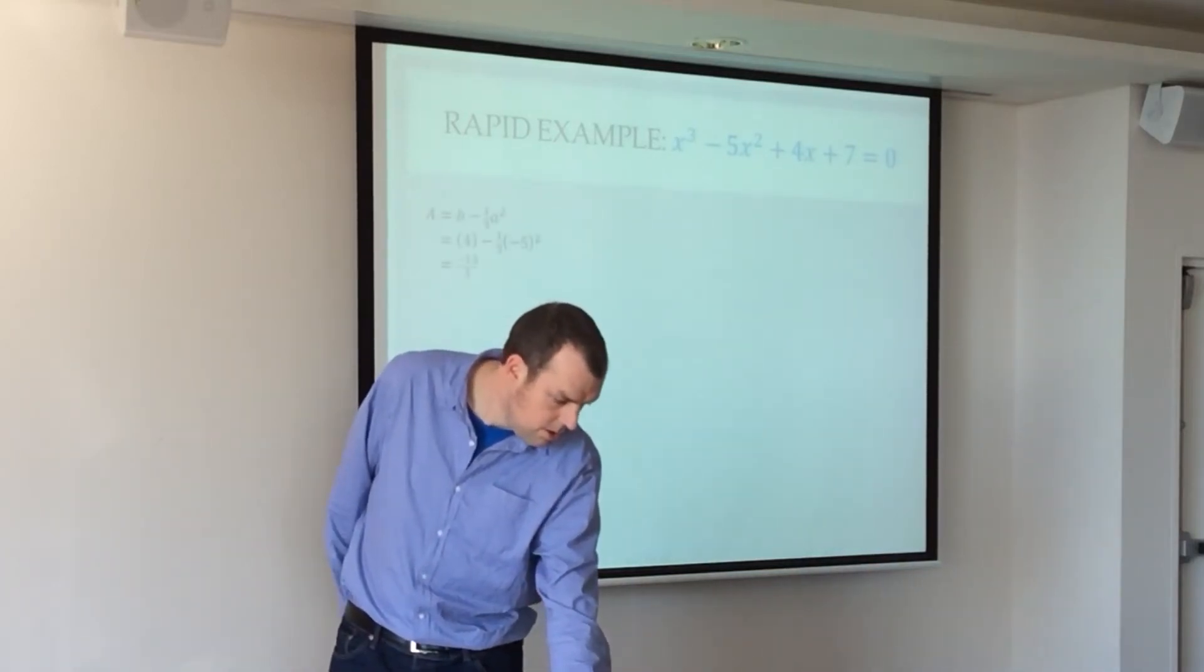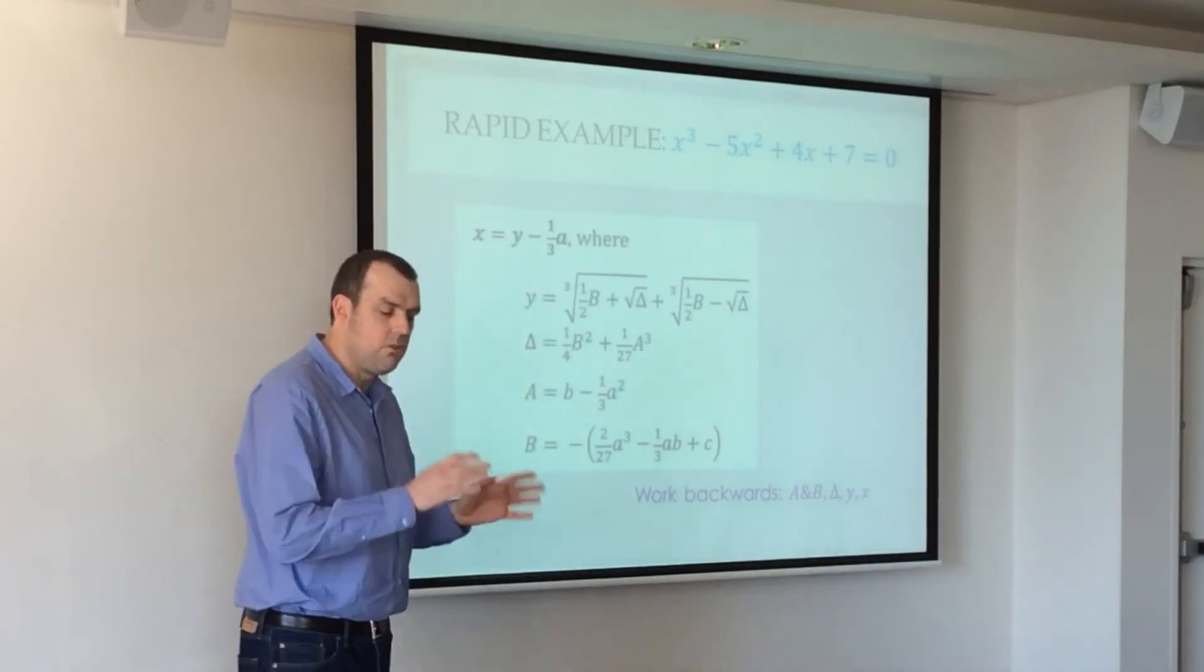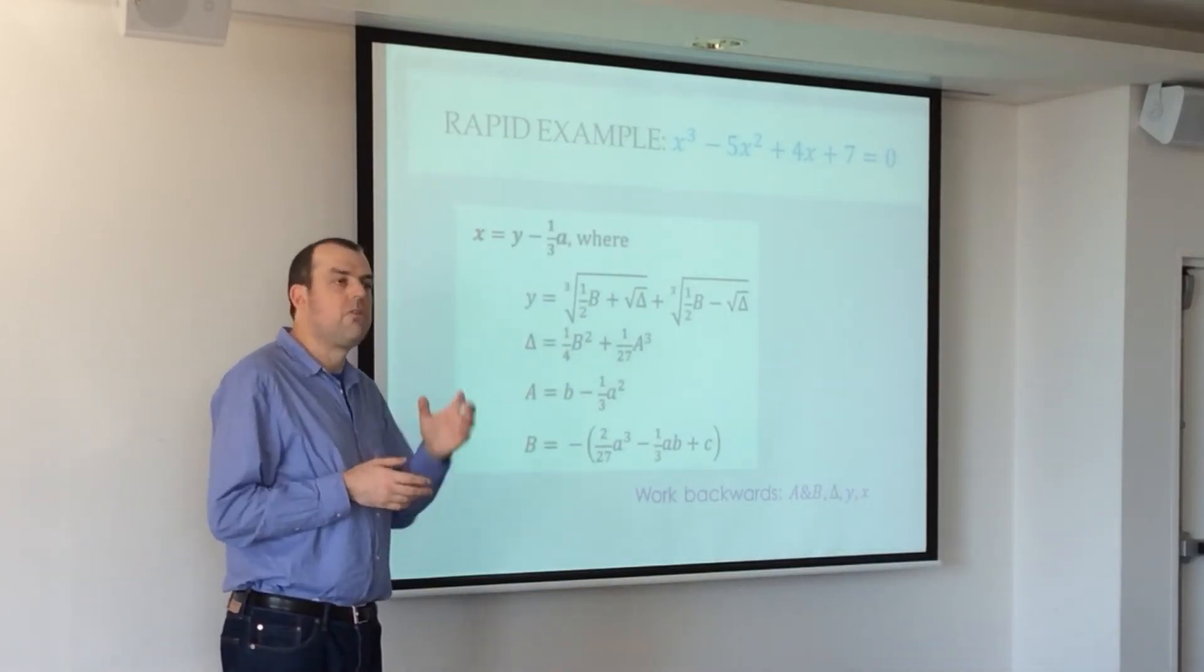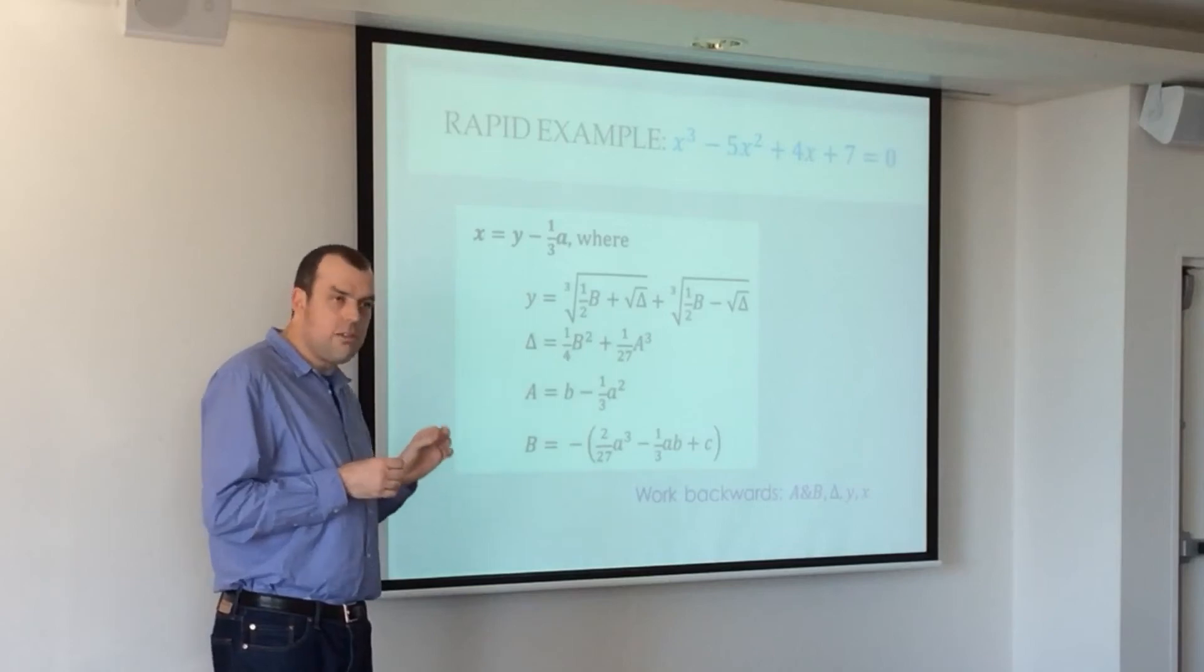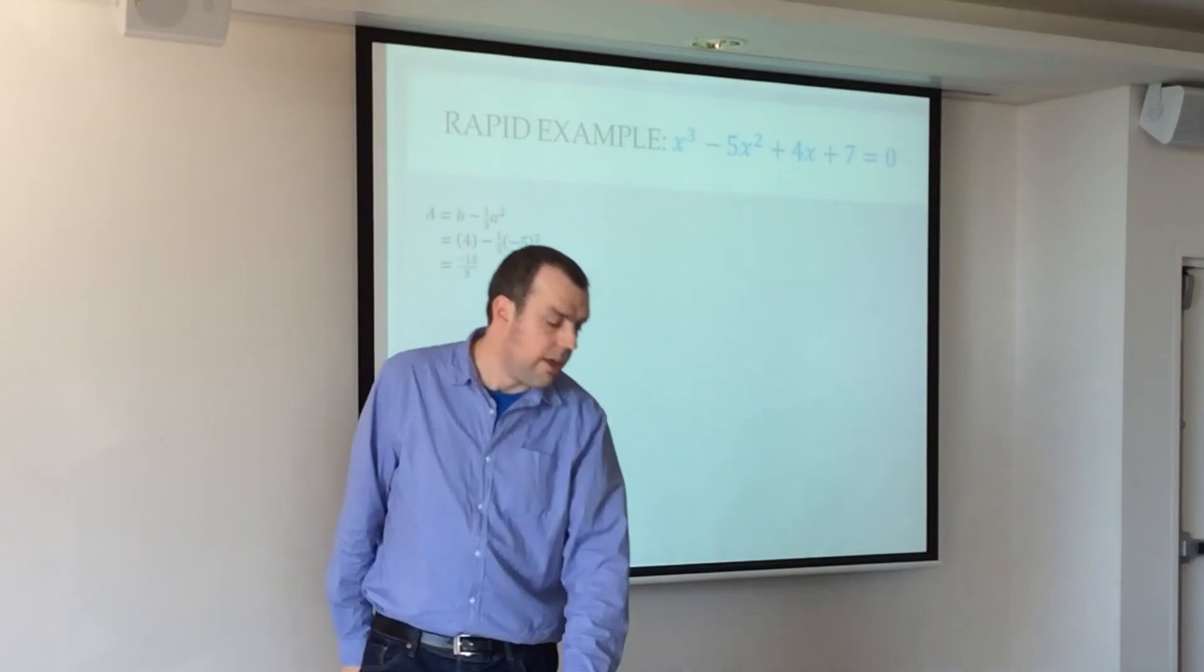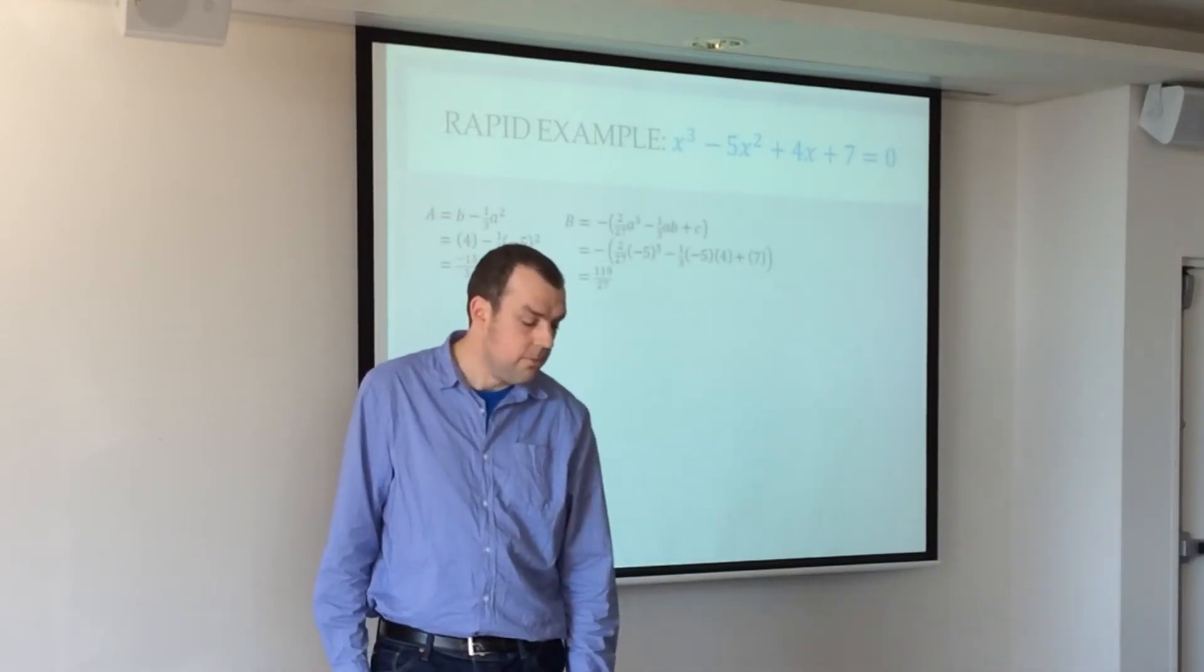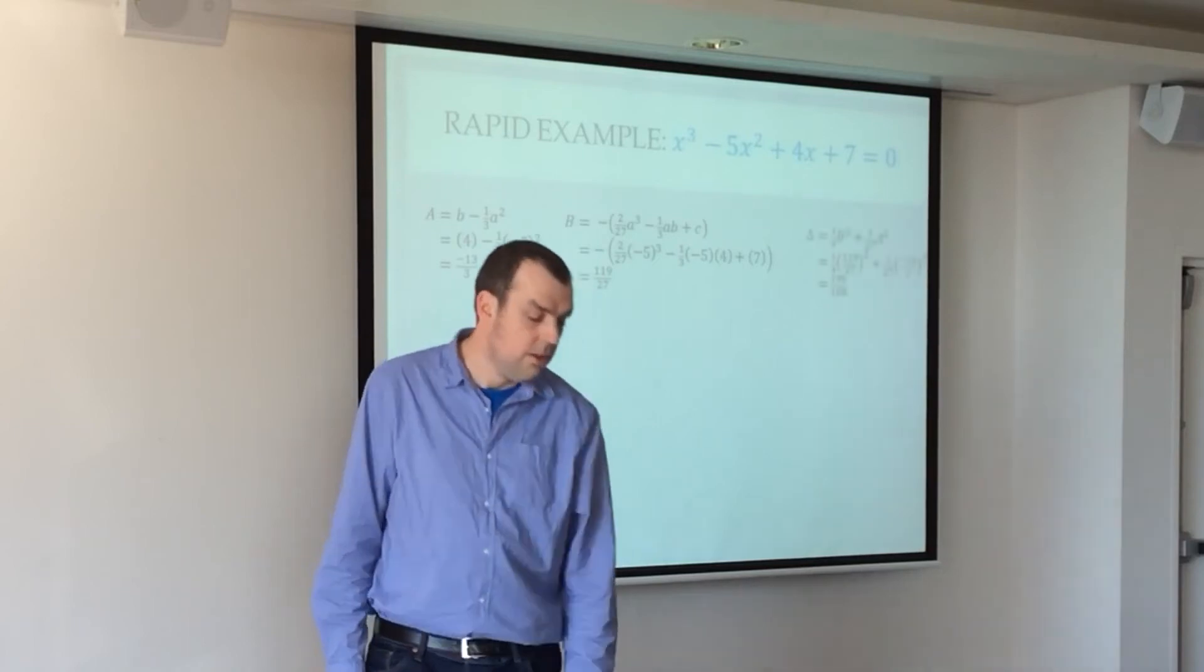So the idea of this rapid example is not to see what the solution is, but to see if you were doing this a lot, how much work would be involved in each one. So there's your a substitution. There's your b substitution. There's your delta.